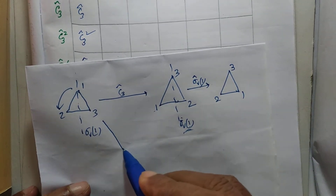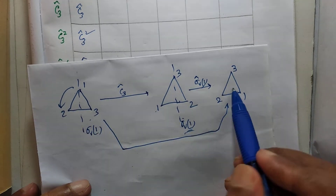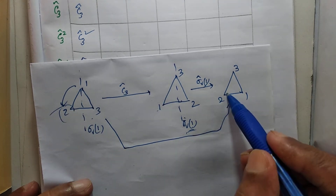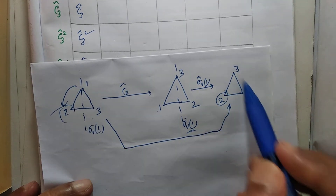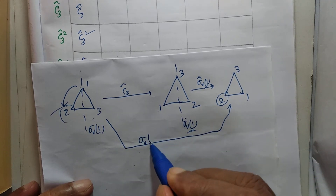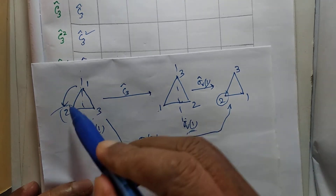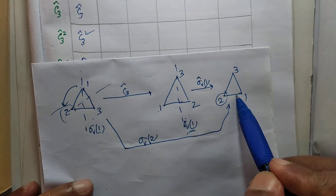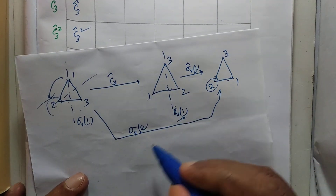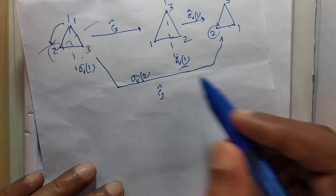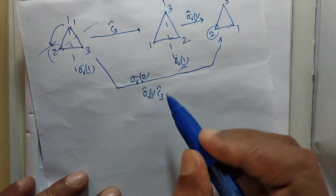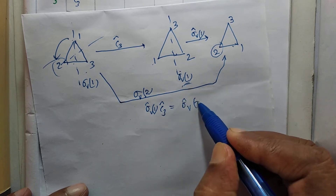What is the direct operation that brings the original configuration to this final one? We note that two is in its own place, and one and three have exchanged places. Therefore, the single operation is σV2 — a reflection on this plane gives you this configuration from the original. So we can write: C3 followed by σV1 equals σV2.